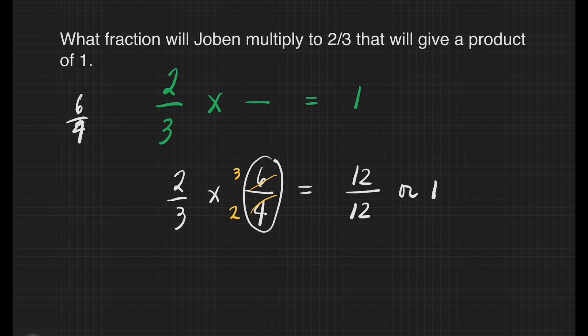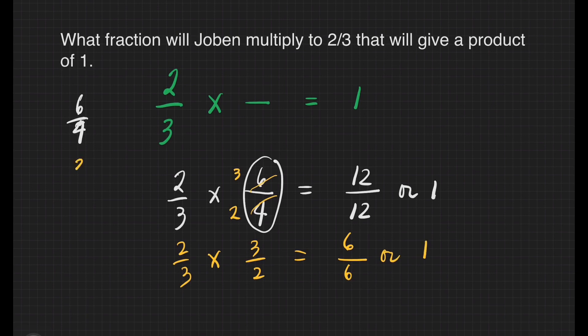Let us do that. 2/3 times 3/2. 2 times 3 is equal to 6. 3 times 2 is equal also to 6, which is equal to 1. So that is 3/2. 3/2 is the lowest term of 6/4.